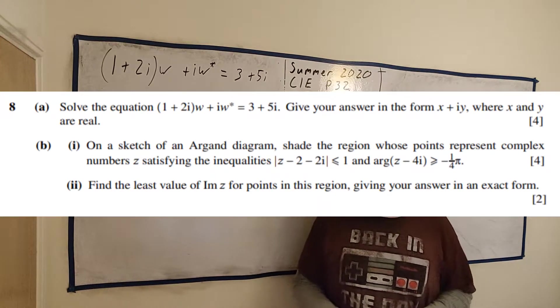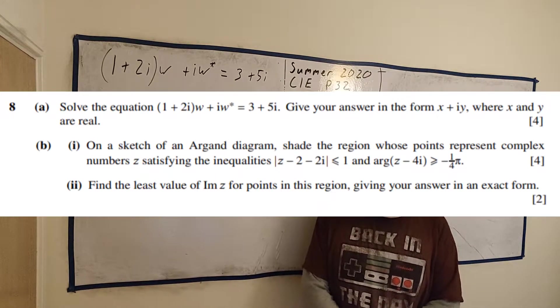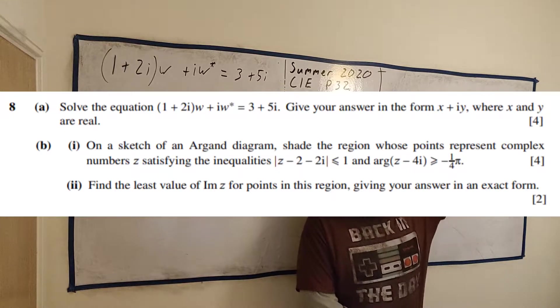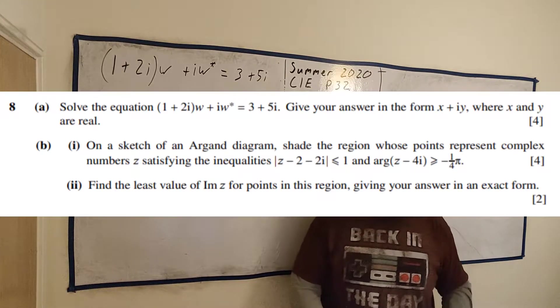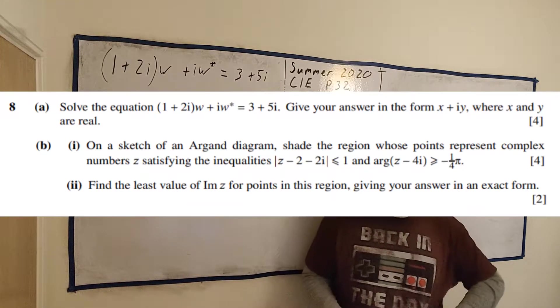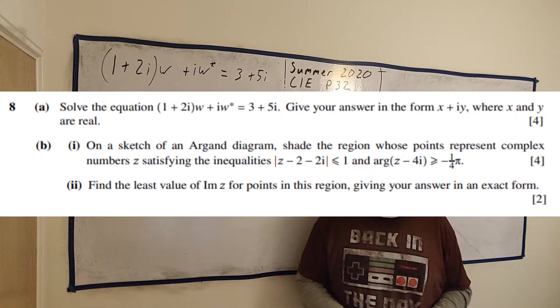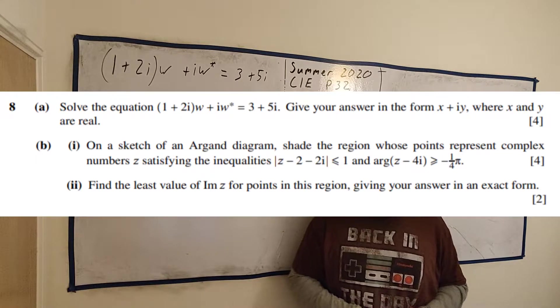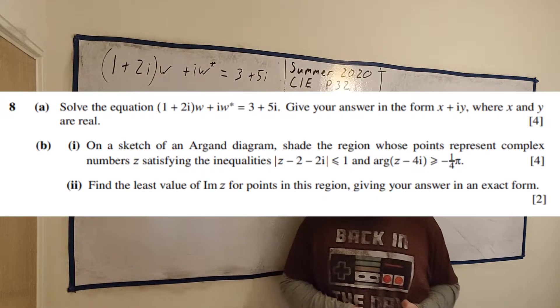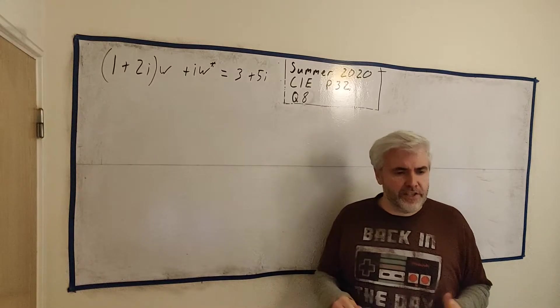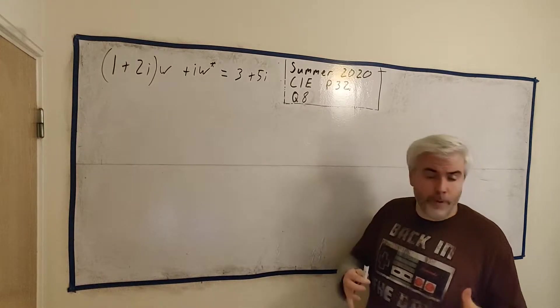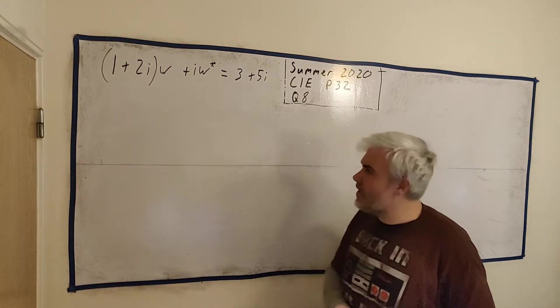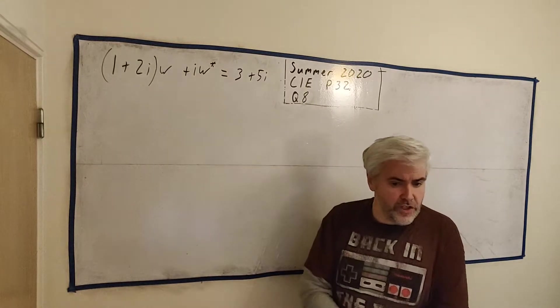This is question 8 from paper 3-2 from the June 2020 Cambridge International Exams. Up the top right of the screen you'll find a card that'll bring you to the playlist for all my solutions for the questions in this paper. And in the description below the video you'll find a link to an image of this question so you can try it before looking at my solution. This question is split into two fully separate questions, both about imaginary numbers.